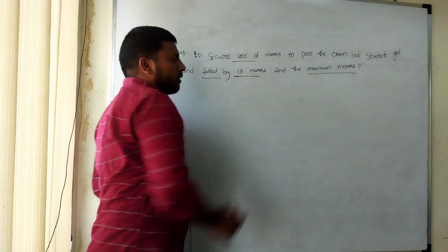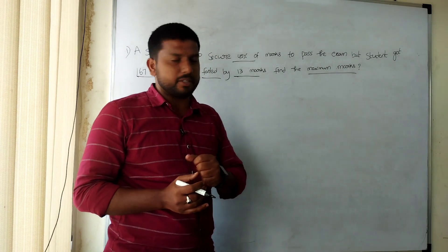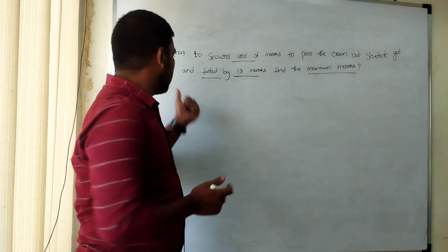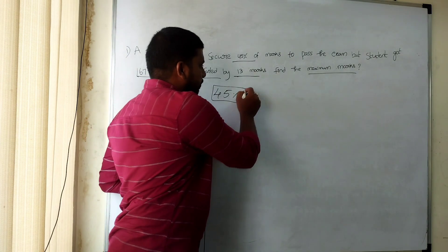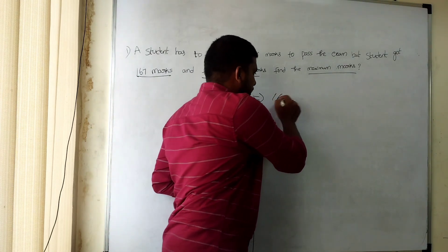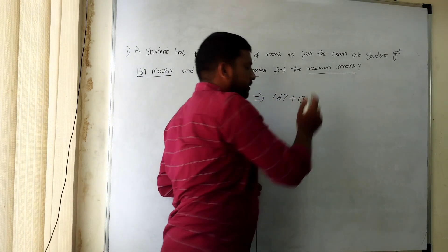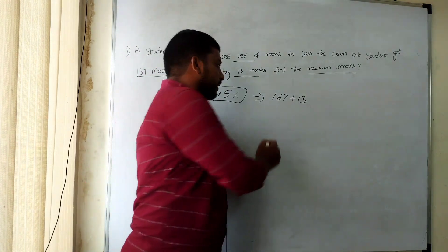First, the student needs 45% of the marks to pass. In other words, 45% is the passing percentage. But the student got 167 marks and failed by 13 marks. If he got 13 more marks, then he would pass.